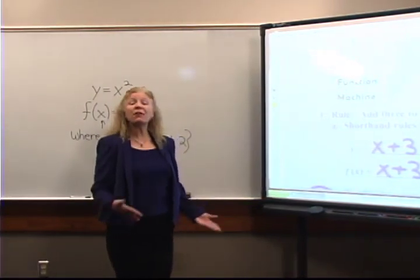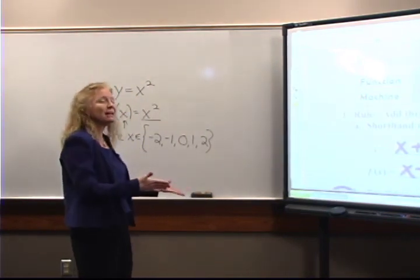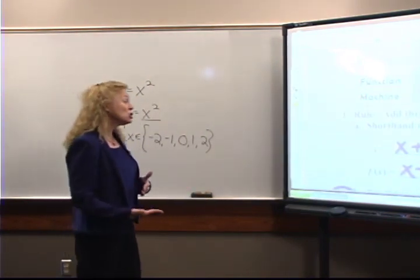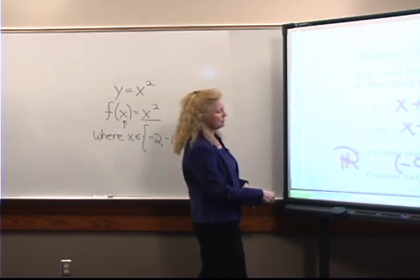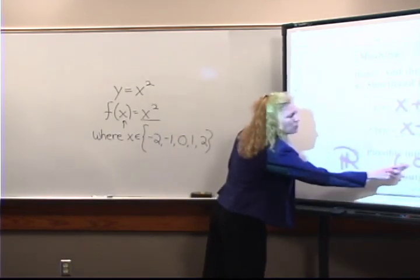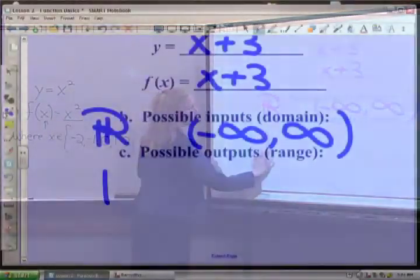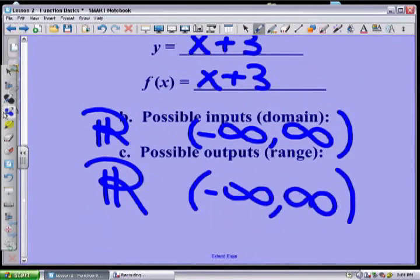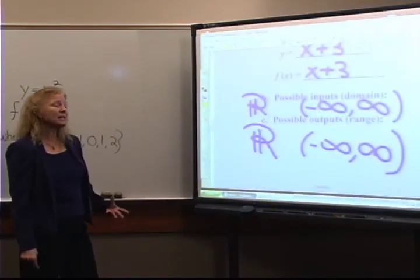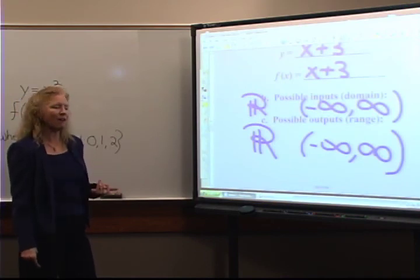Let's ponder this. What if I wanted to get out 10 — what would I put in? Seven. What if I wanted to get out five and a half? There would be a number. If I wanted to get out pi, there is a number I could put in to get it. So my range would also be all reals: negative infinity to positive infinity. We don't work with ranges a whole lot — a lot of times ranges are more easily found from looking at graphs.